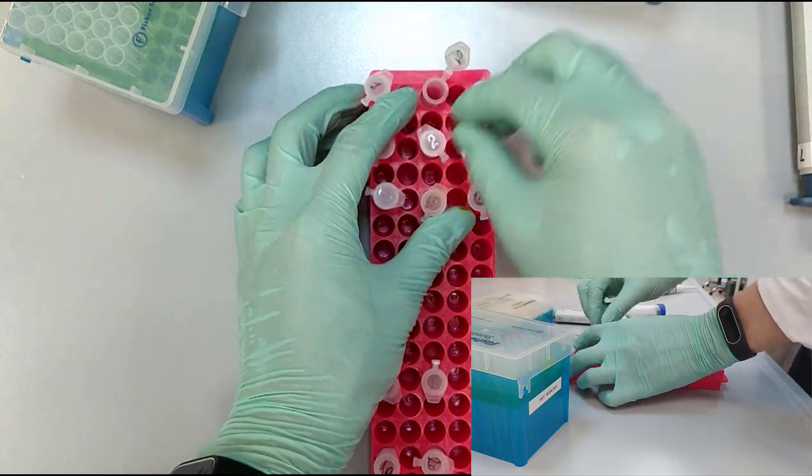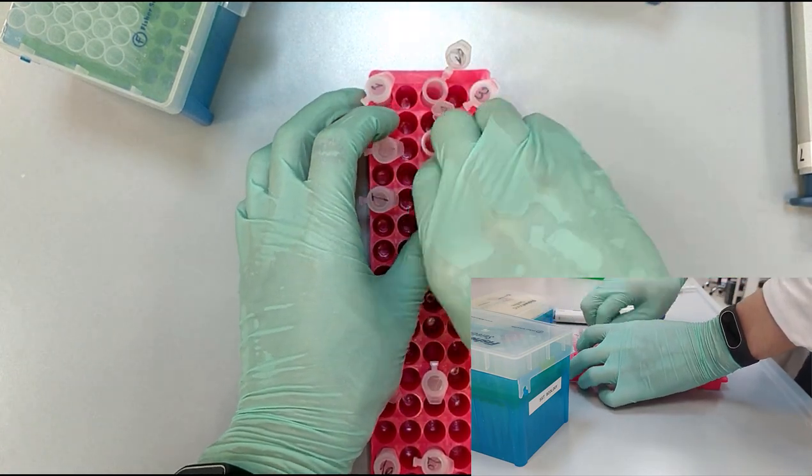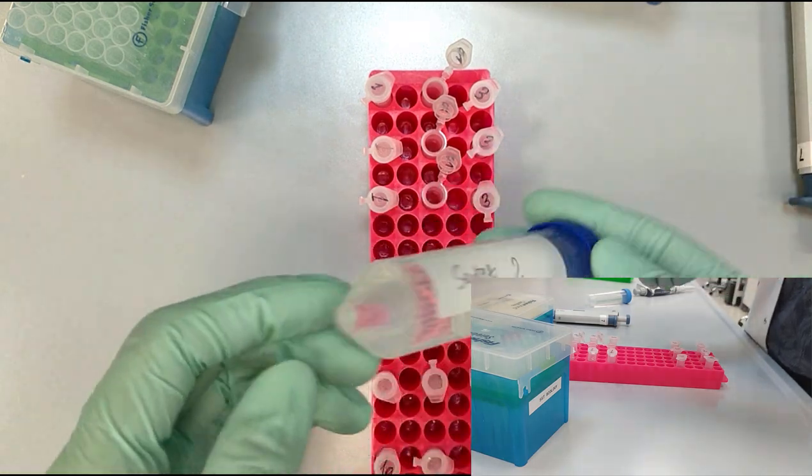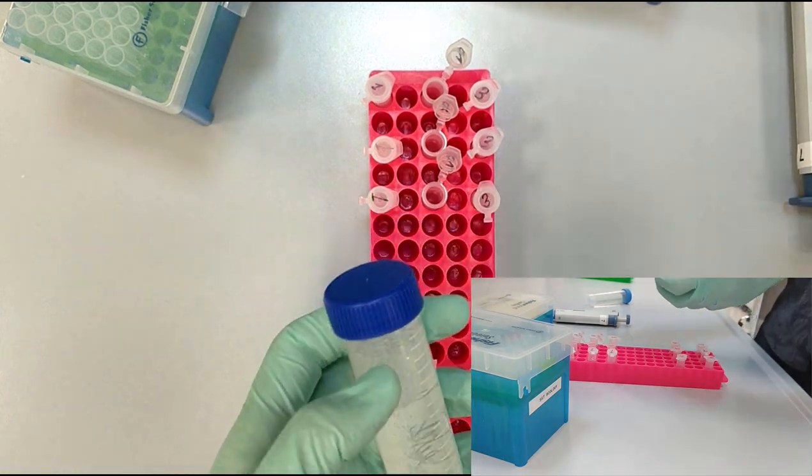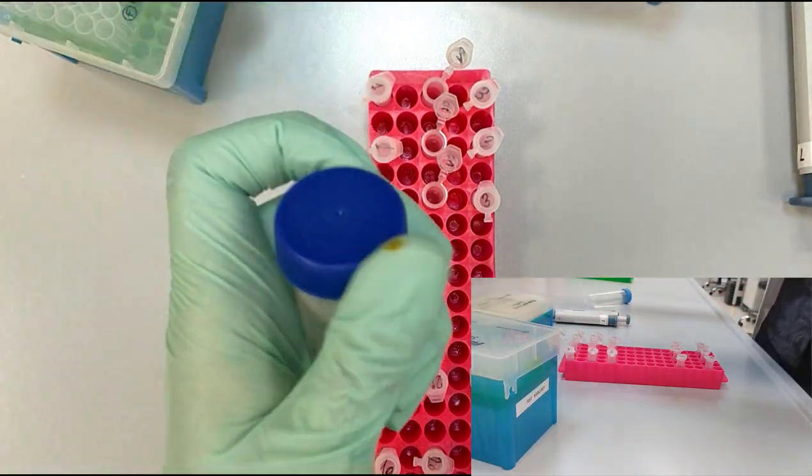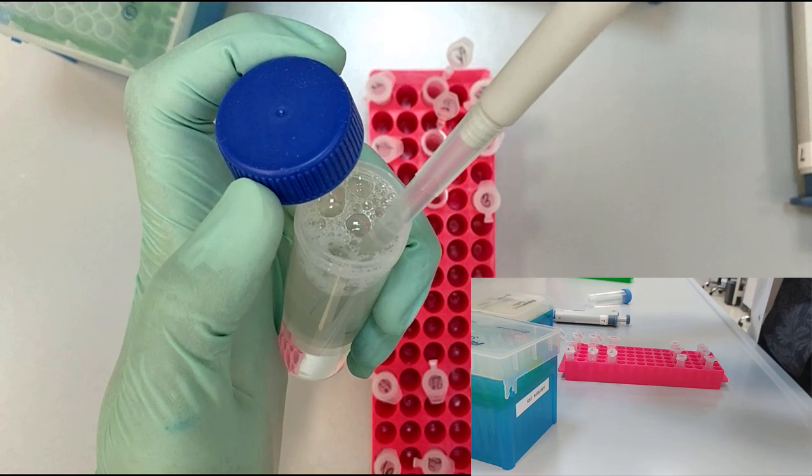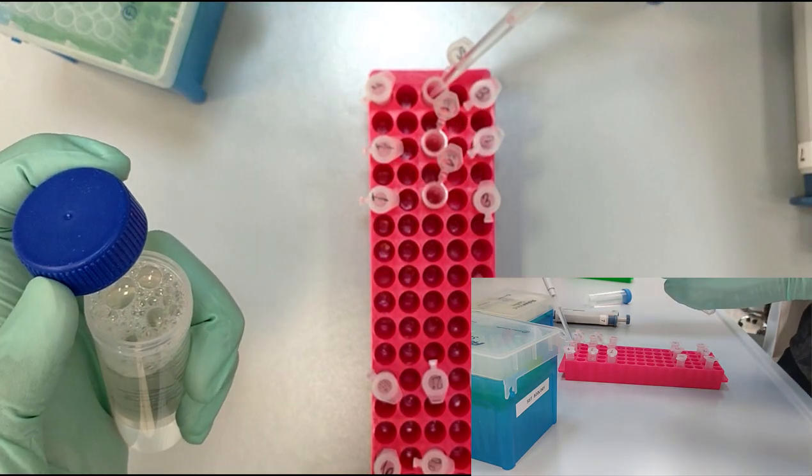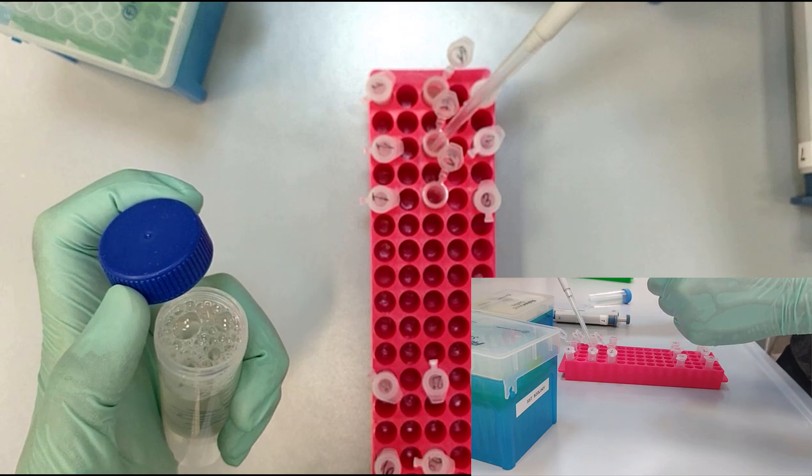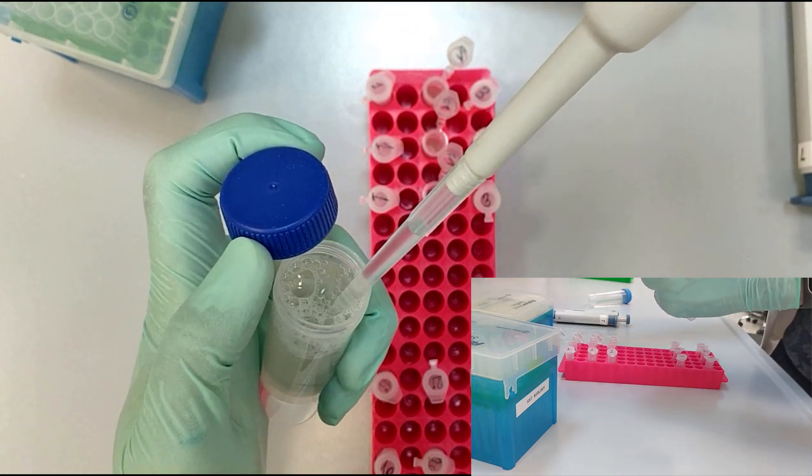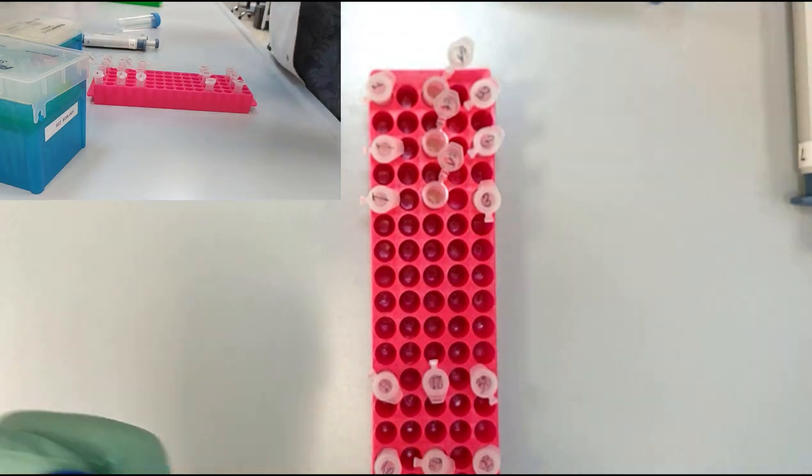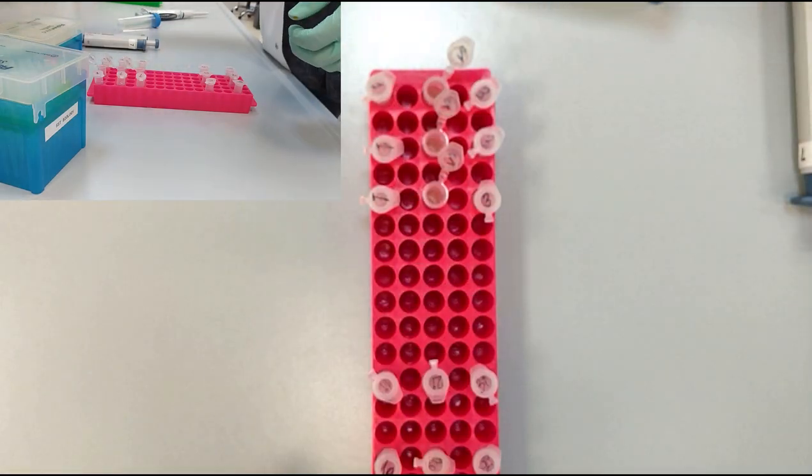Now we are going to open the second set. This is for secret solution 2. You also mix it, take the pipette, have your tip on, and then open the falcon tube. Now we have all of the eppendorf tubes with one milliliter of the second secret solution, and we close the lids.